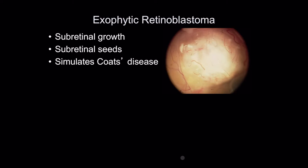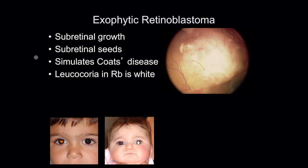There are two main growth patterns of retinoblastoma and one less well-known growth pattern. The exophytic type involves subretinal growth with subretinal seeds, and this can simulate Coates disease. But the clue is that the leukocoria in retinoblastoma is white, compared to Coates disease where it is a yellowy color — xanthocoria rather than leukocoria.